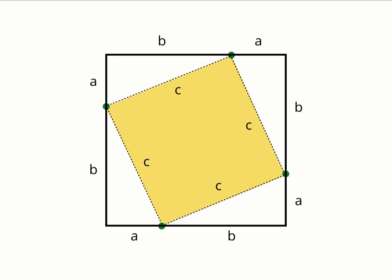If we have drawn everything correctly, we should have 4 smaller right triangles surrounding an inner square with side length C.